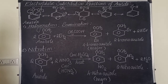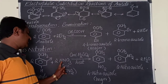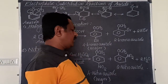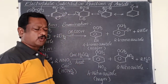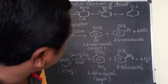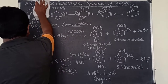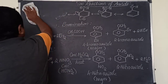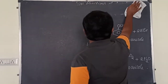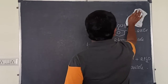To explain the nitration of anisole: anisole reacts with the nitrating mixture to give 2-nitroanisole and 4-nitroanisole, with 4-nitroanisole as the major product. The third electrophilic substitution reaction is Friedel-Crafts alkylation, and the next one is Friedel-Crafts acylation.